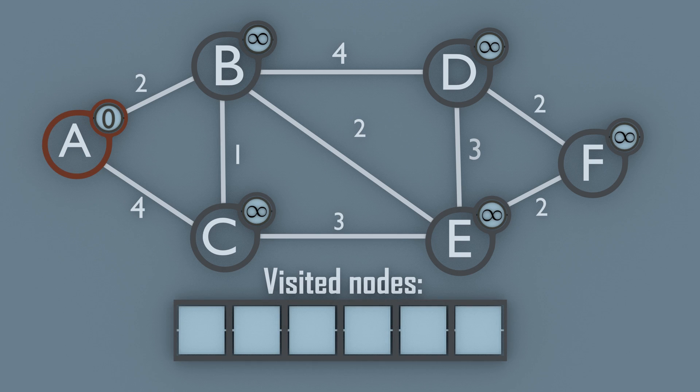First we compare the distance from node A to node B to the weight of node B. Because the distance 2 is less than the weight of infinity, we set the weight of the node to 2. Then we do the same comparison on node C. Because the weight of the node is greater than the distance, we update the weight to 4.